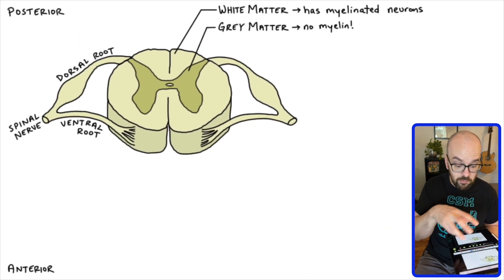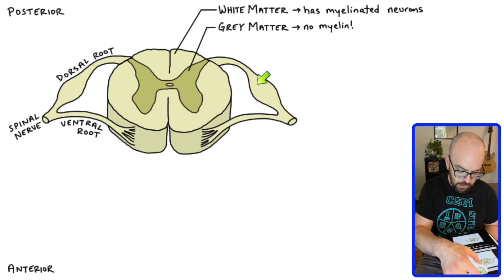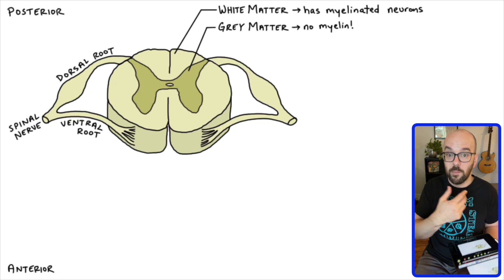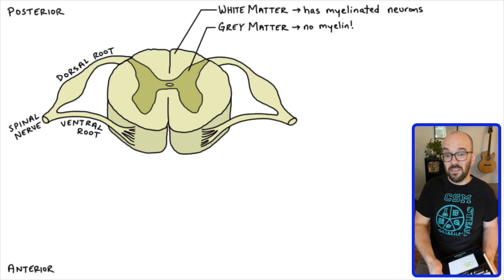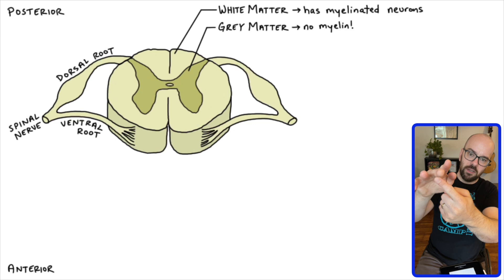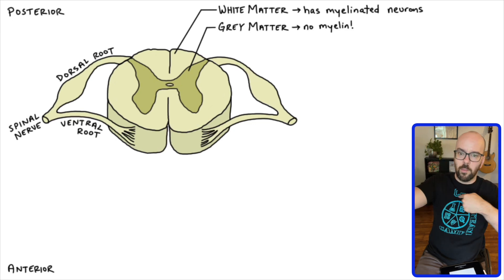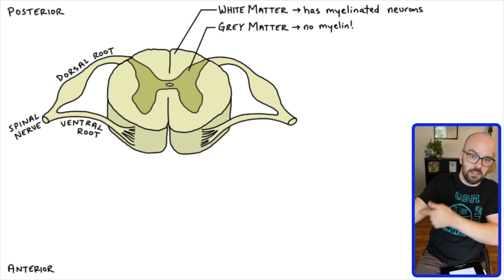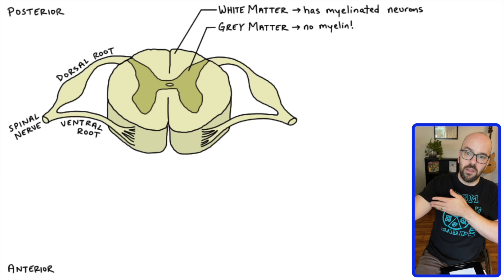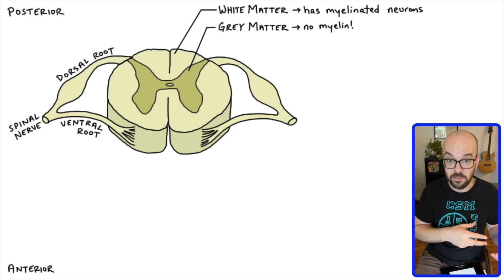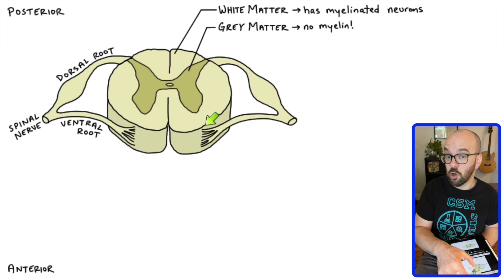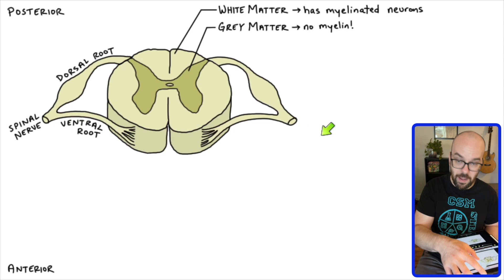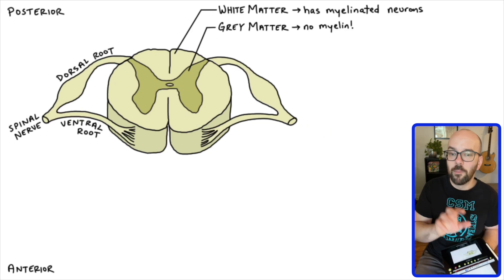The white matter surrounding the gray matter, and the fact that our nerves coming in are white matter, clues us in that signals coming in from the rest of the body are going to be on myelinated axons. If I touch something, signals have to travel from my finger all the way down my arm to my spinal cord — that's a long distance where the signal just has to get there really quickly. So we have myelinated neurons that can send that signal really fast, unmyelinated neurons in between, and then myelinated neurons to send the signals back out to the muscles.